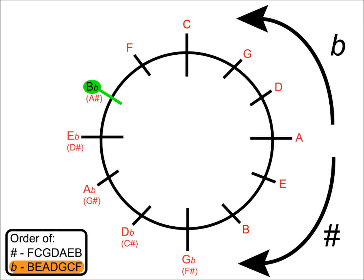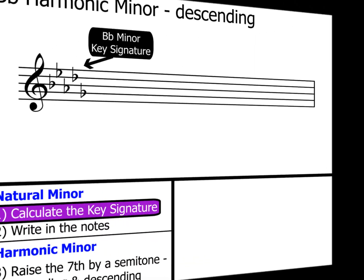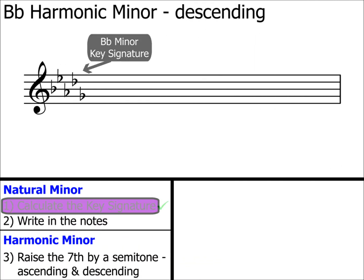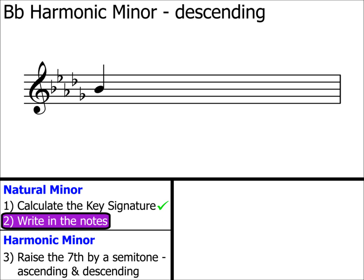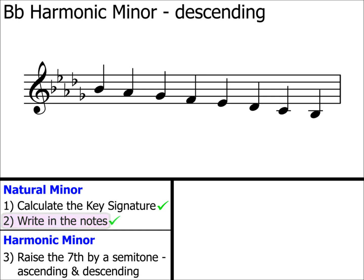We look at the order of flats — the first five letters are B, E, A, D, G. So these are the notes which will make up our key signature. Let's pop them onto our stave. Step one: complete. Step two: write in the notes. We start on B flat — there's no need to put in the flat symbol as this is covered in the key signature. Ensuring that there is a note in every space and on every line, we add in the notes down to the next B flat, going downwards as this is a descending scale. Step two: complete. We've now created our B flat natural minor scale.